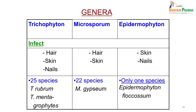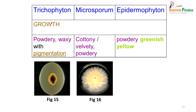Trichophyton infects hair, skin, and nails; Microsporum infects hair and skin; Epidermophyton infects skin and nails. There are 25 species of Trichophyton, of which T. rubrum and T. mentagrophytes are most common. Commonly seen Microsporum species are M. gypseum and M. canis, while there is only one Epidermophyton species — E. floccosum. On Sabouraud's dextrose agar, Trichophyton produces powdery or waxy colonies with pigmentation; Microsporum produces cottony, velvety, or powdery colonies; Epidermophyton produces powdery greenish-yellow colonies. Colonies may start as white rough colonies and change character over time.